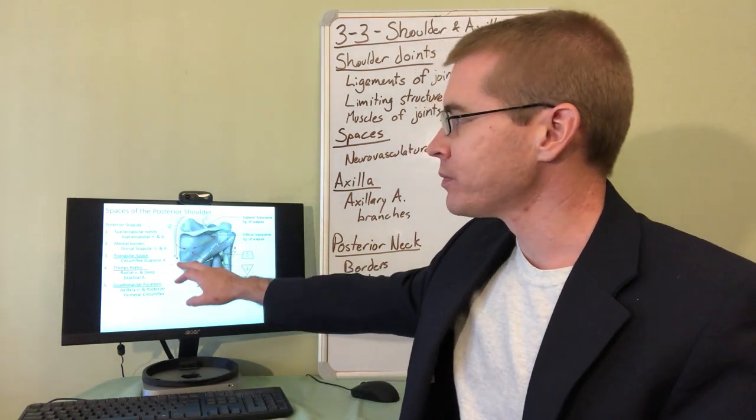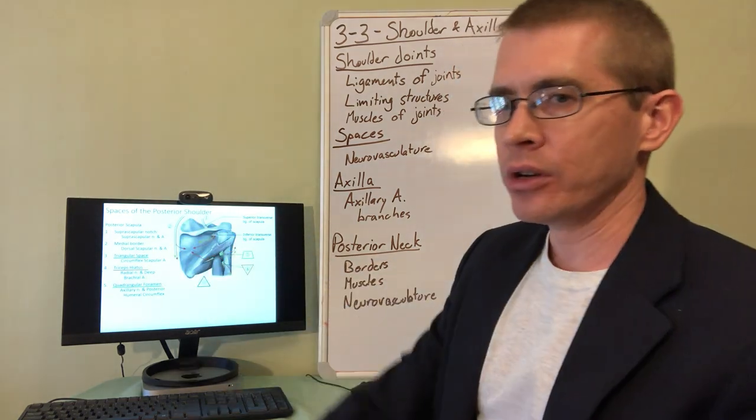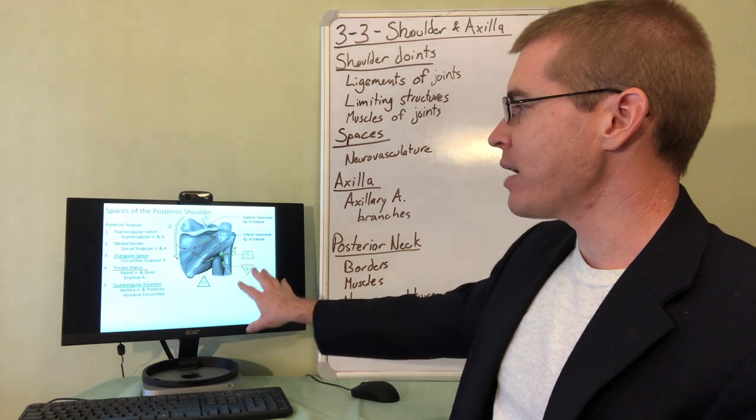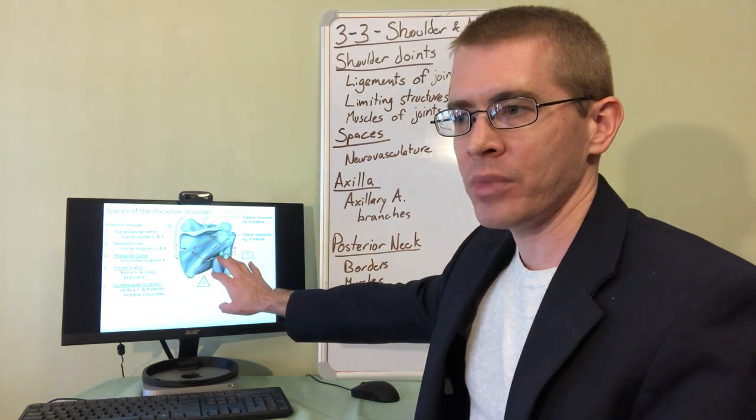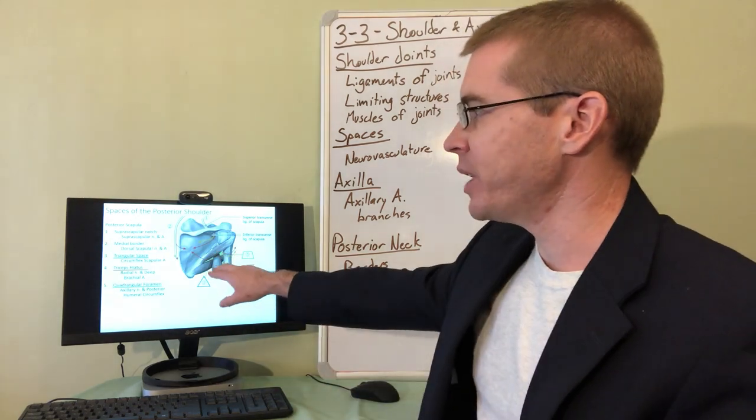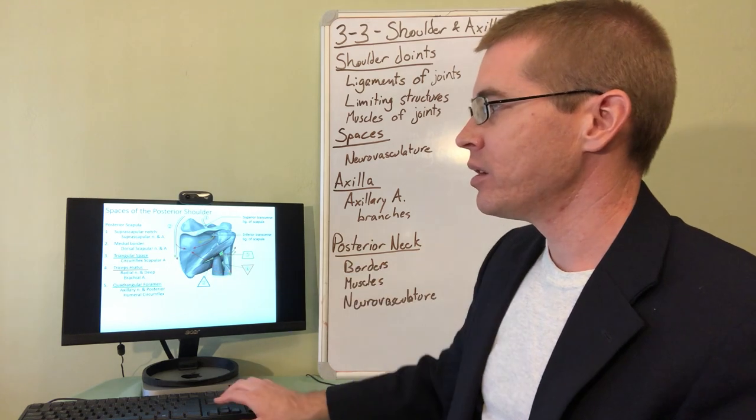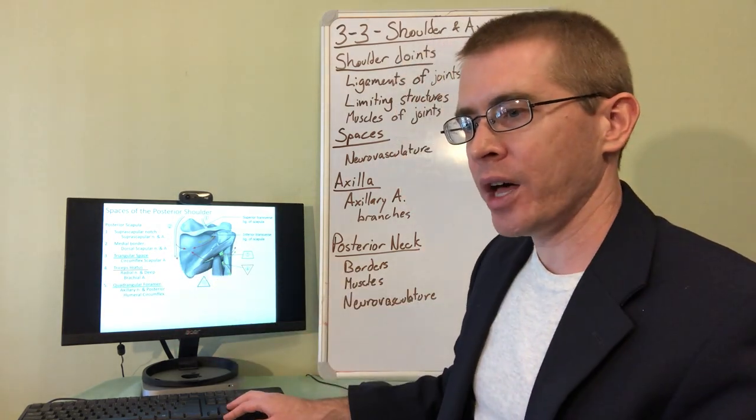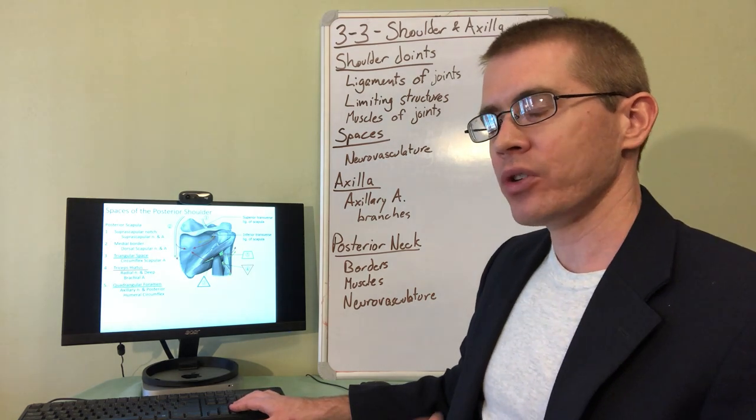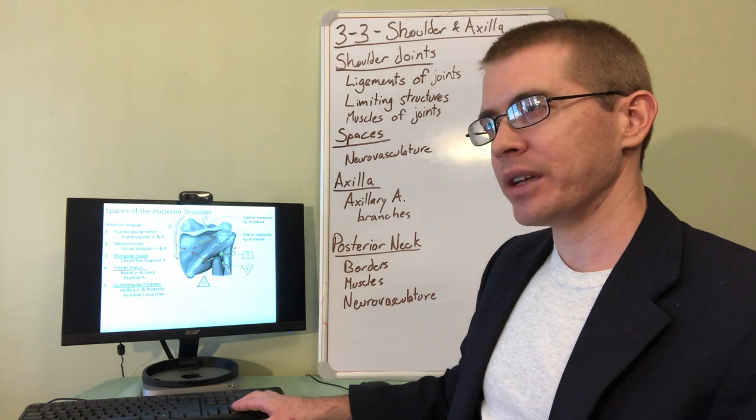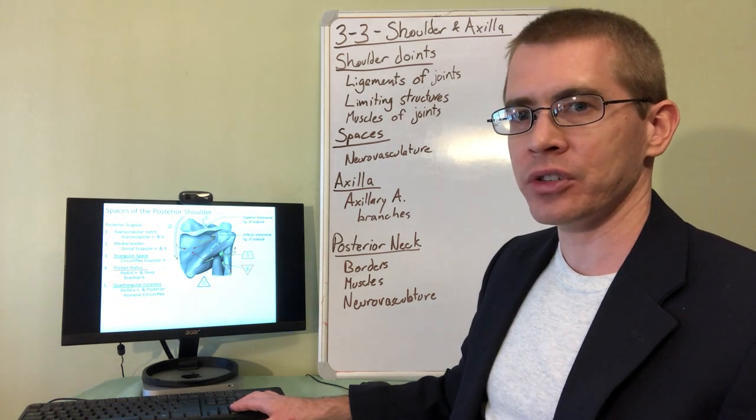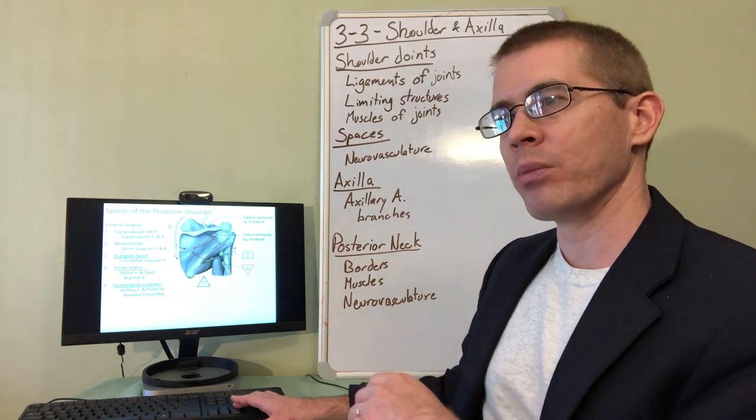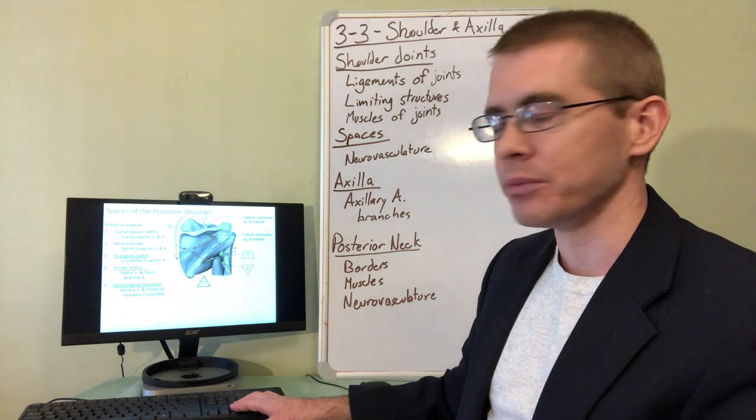Along the medial border of the scapula, you will find the dorsal scapular nerve and artery. So now with those two areas out of the way, let's look at the spaces that the scapular muscles form here. So there's three different spaces, the triangular space, the triceps hiatus, and the quadrangular foramen. So take a look at those. It's important that you be able to identify what neurovasculature is within those spaces, because those are going to form landmarks for you in your dissection, as well as understanding the pathway these nerves take. So you can use that information diagnostically to determine where a patient was most likely injured, if they have defects or muscle weaknesses or dermatome sensory problems, for instance.